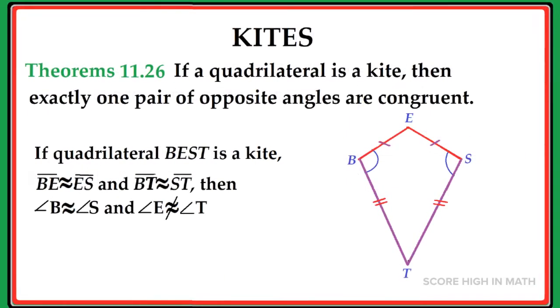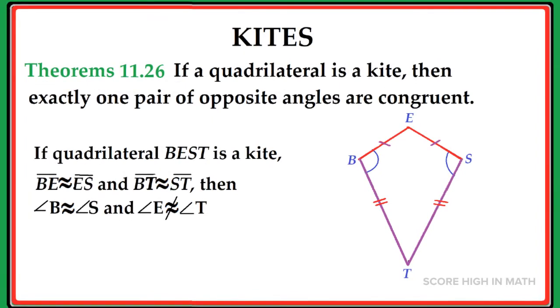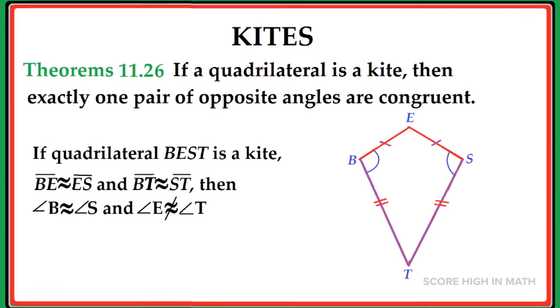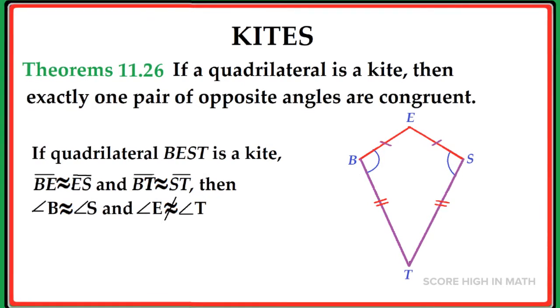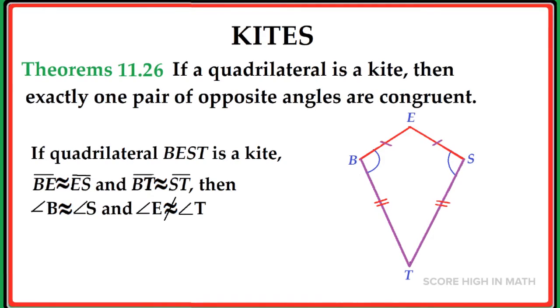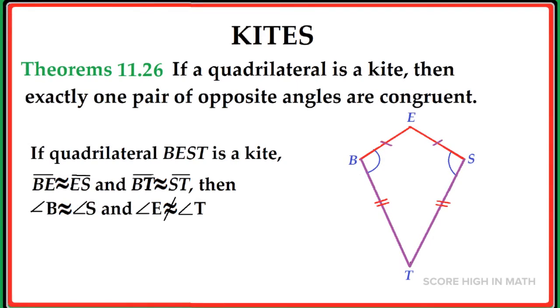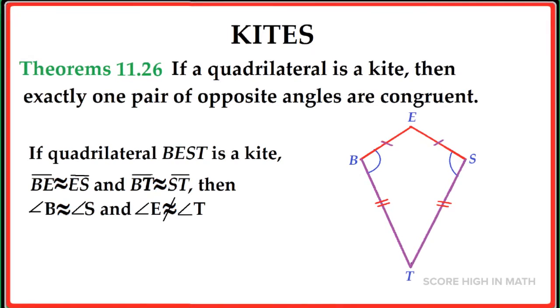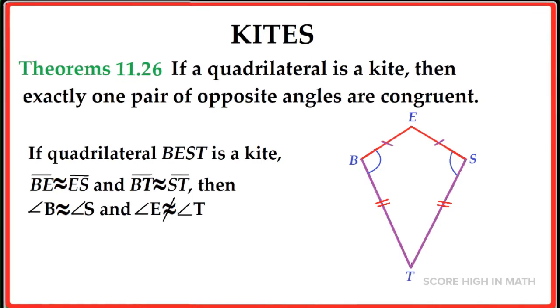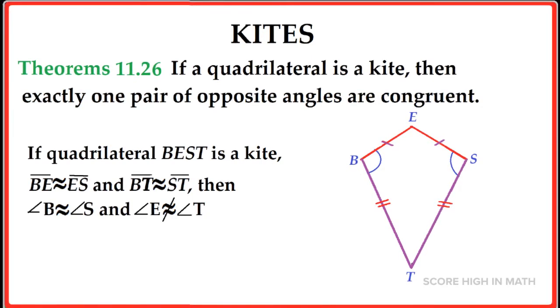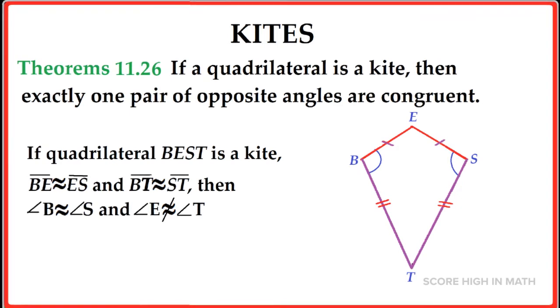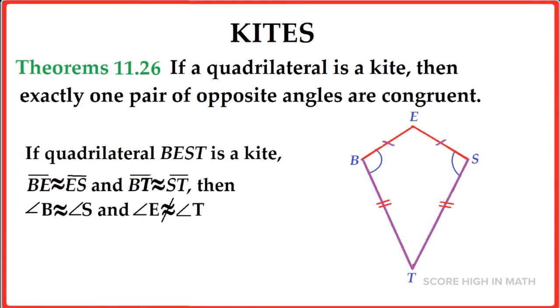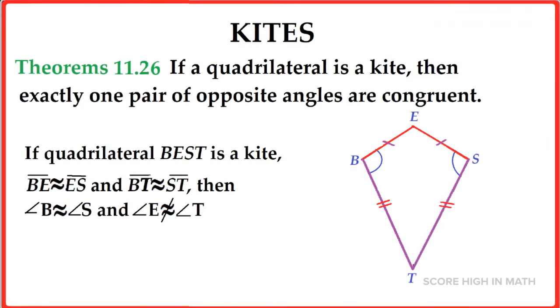The two consecutive sides, line segment BE and line segment ES, and line segment BT is congruent to line segment ST. Then the measure of angle B is congruent to the measure of angle S. I marked them with blue arc, but the measure of angle E is not congruent to the measure of angle T.